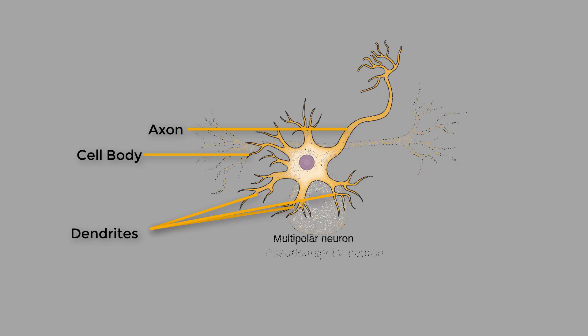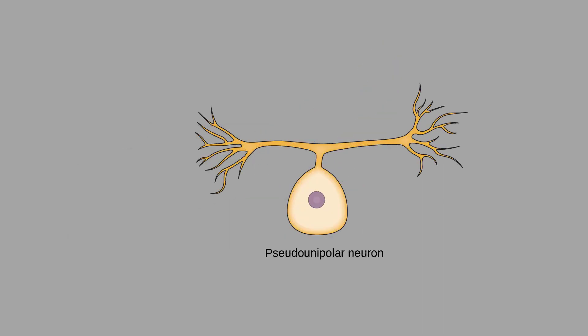The fourth type is called a pseudo-unipolar neuron. This kind has a single structure that extends from the soma like a unipolar cell which later branches out into two distinct structures called a bipolar cell. Hence, a pseudo-unipolar neuron shares characteristics of both unipolar and bipolar neurons.